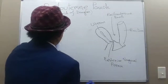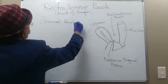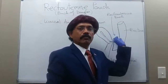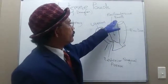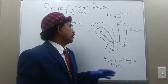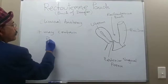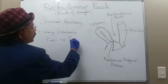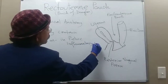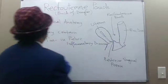Now for the clinical anatomy and clinical significance: this is the most dependent part of the peritoneal cavity in the upright position and most dependent part of the pelvic cavity in the supine position. So if there is any collection, fluid will always settle towards the bottom by gravity. It may contain pus in pelvic inflammatory disease.